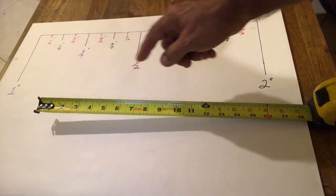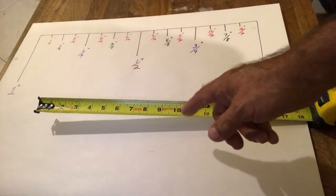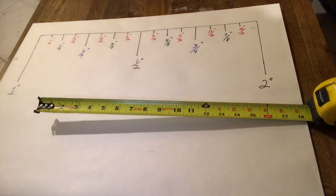One, two, three, four, five, six, seven, eight, nine, ten, eleven, twelve inches, which makes a foot. So that's one foot.